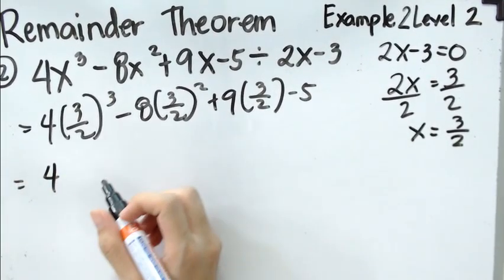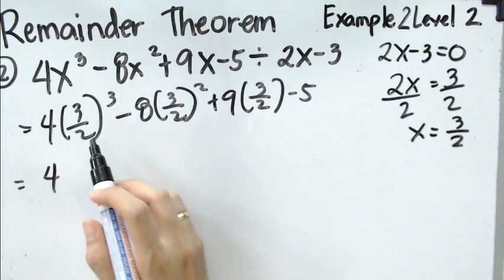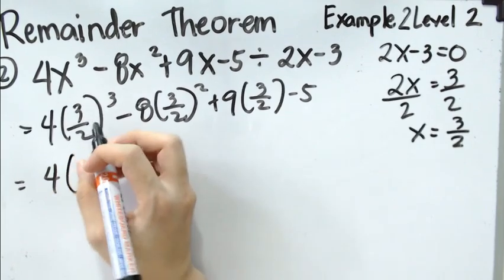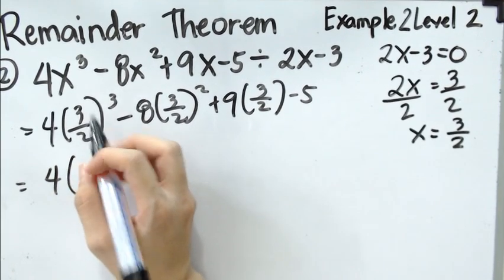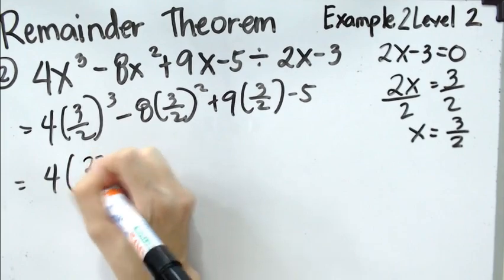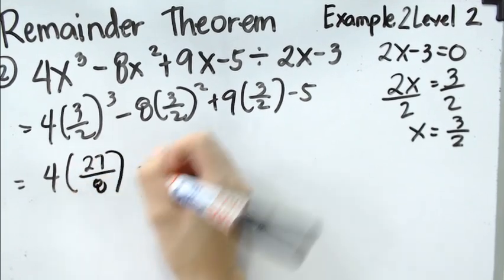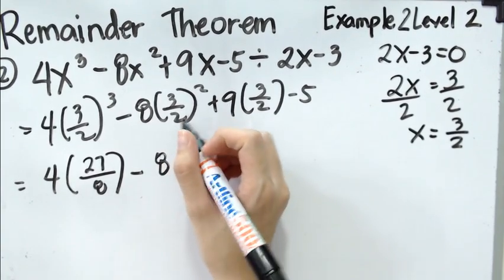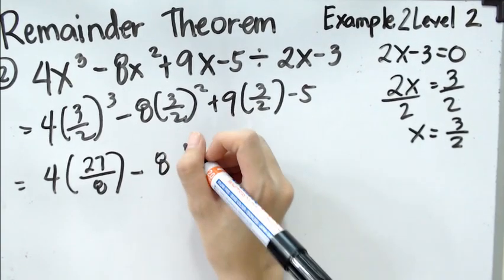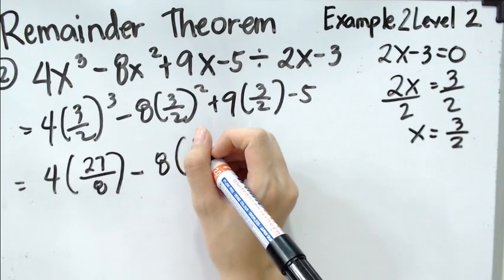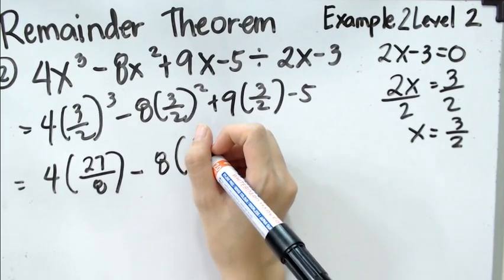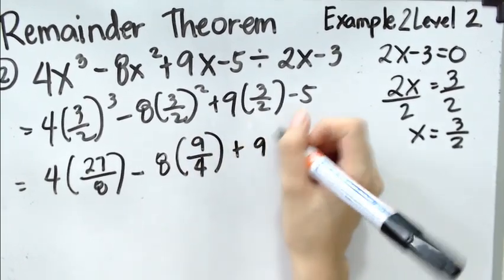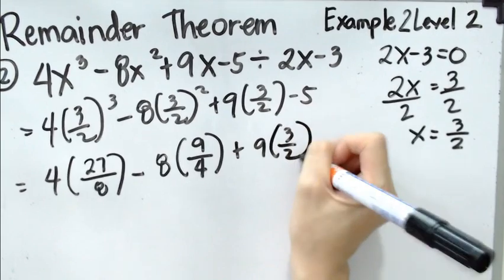4, 3 over 2 cubed means 3 over 2 multiplied by 3 over 2 multiplied by 3 over 2. So, then that will get 27 over 8 minus 8 times 3 over 2 squared. 3 over 2 squared means 3 over 2 times 3 over 2. So, we have here 9 over 4 plus 9 times 3 over 2 minus 5.